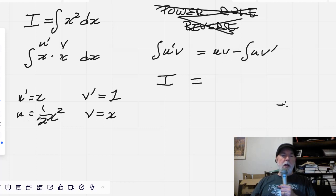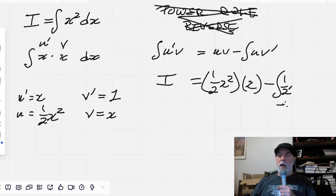So that's one half x squared times x minus the integral of u, which is half x squared times v prime, which is just times one. Okay, so let's simplify this. I'm going to write the I again.